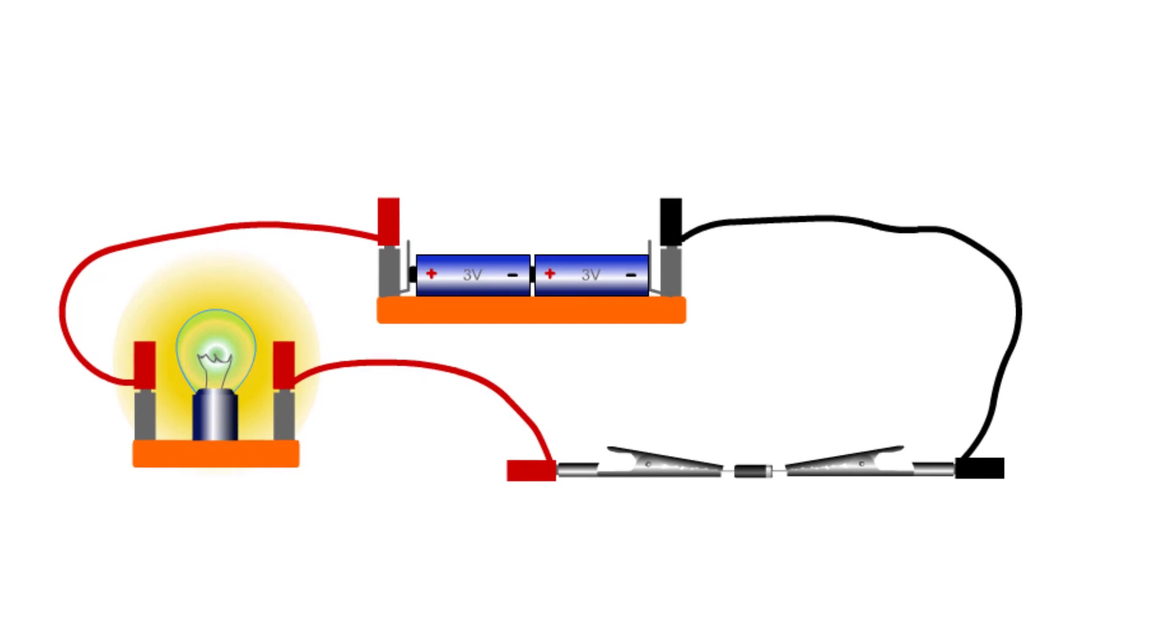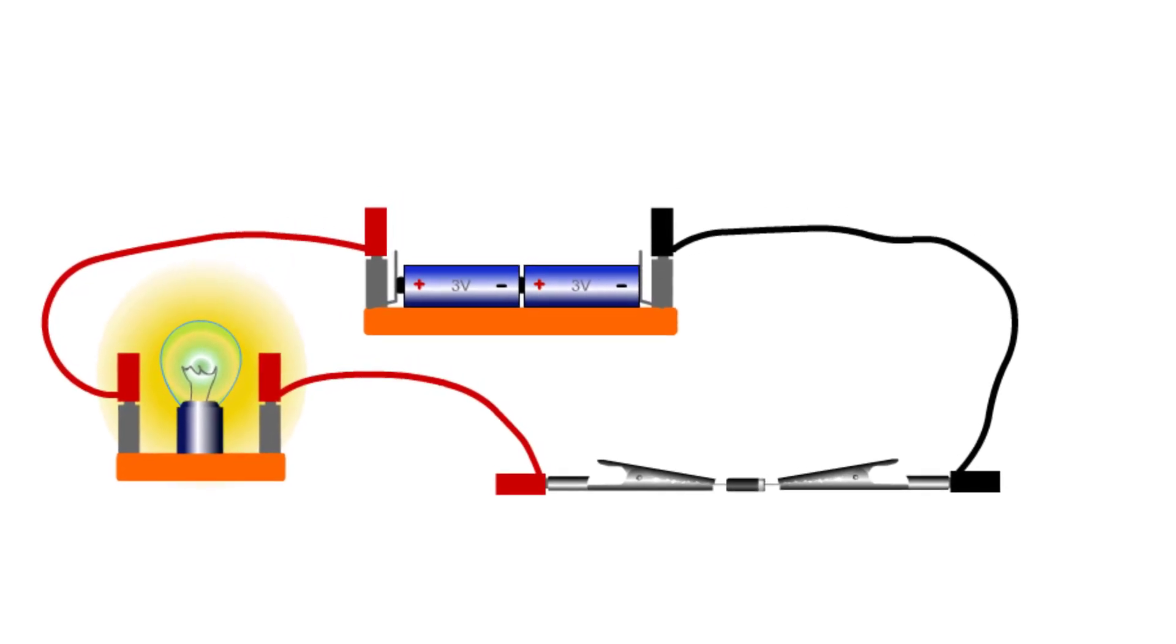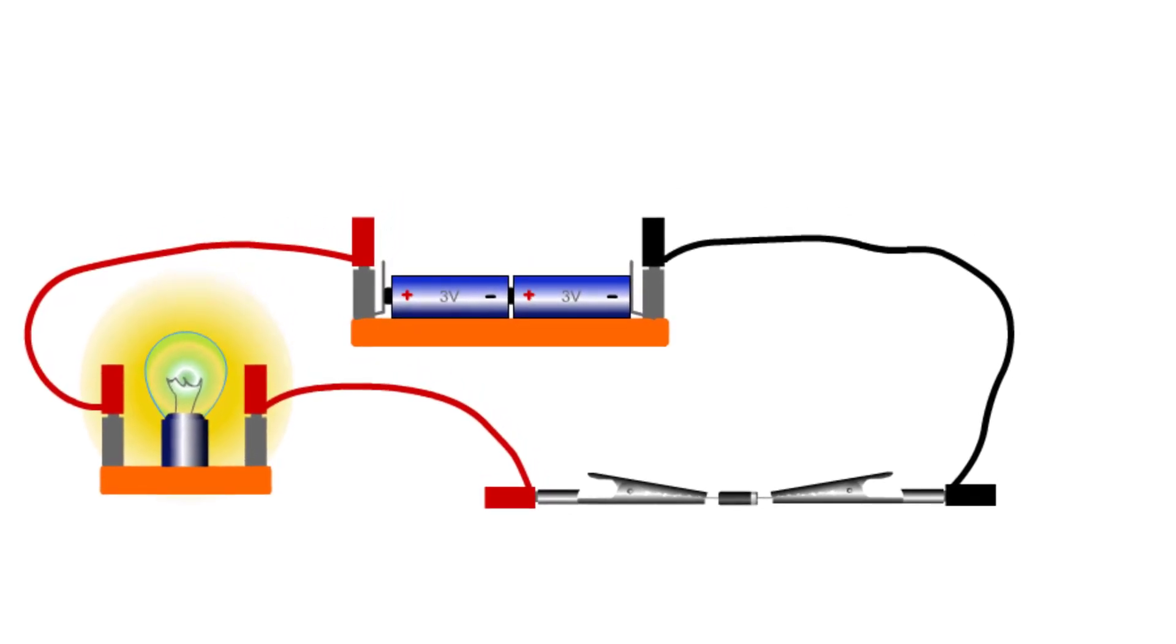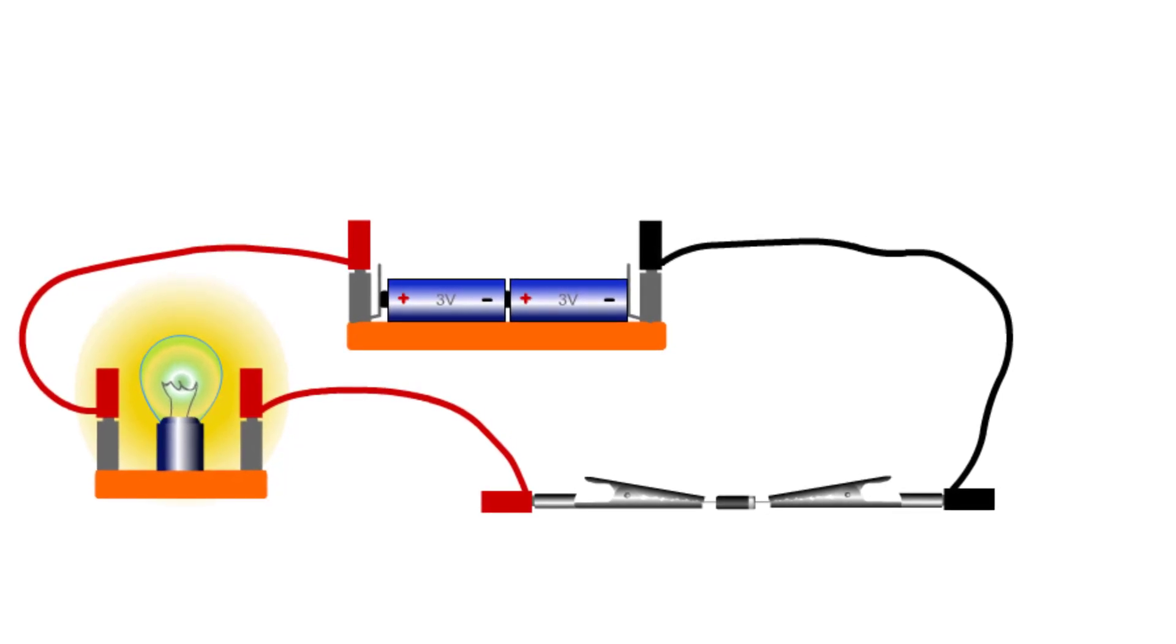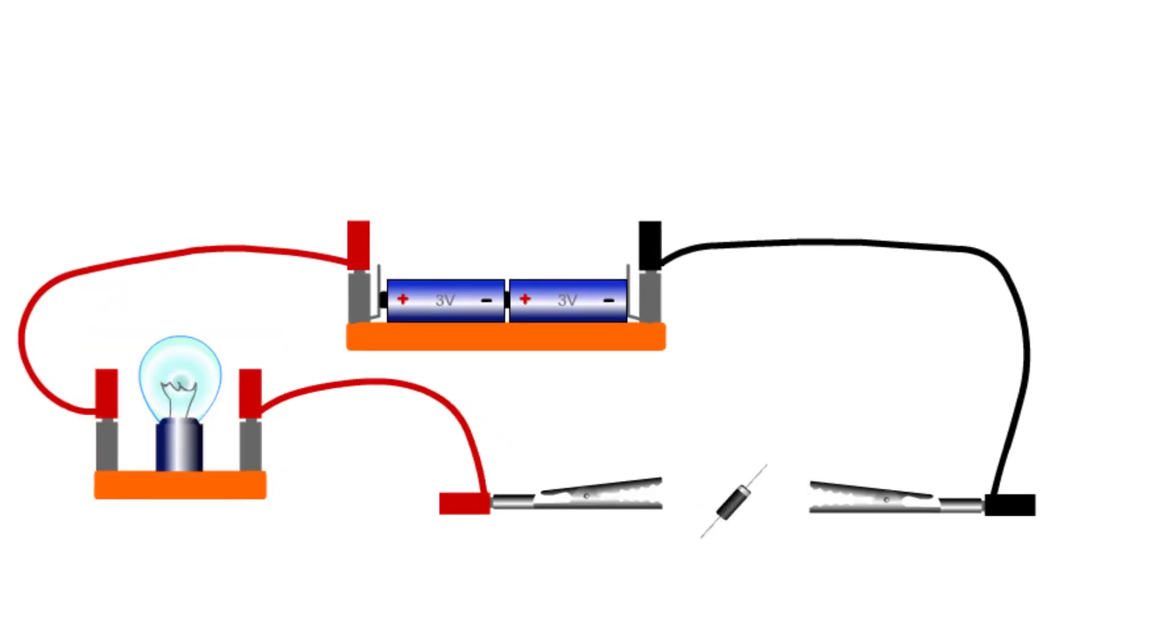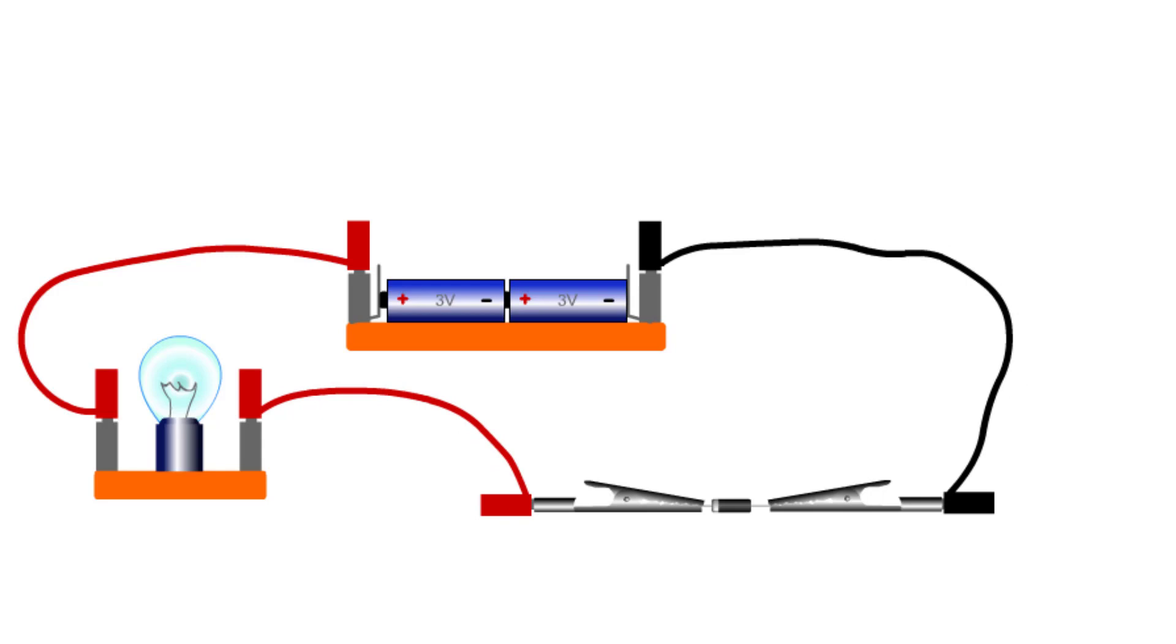With the diode connected this way around, the bulb lights normally because current can flow through the diode. But if we turn the diode around, the bulb doesn't light because current can't flow through the diode in that direction. If current can't flow through the diode, then it can't flow anywhere in the circuit.